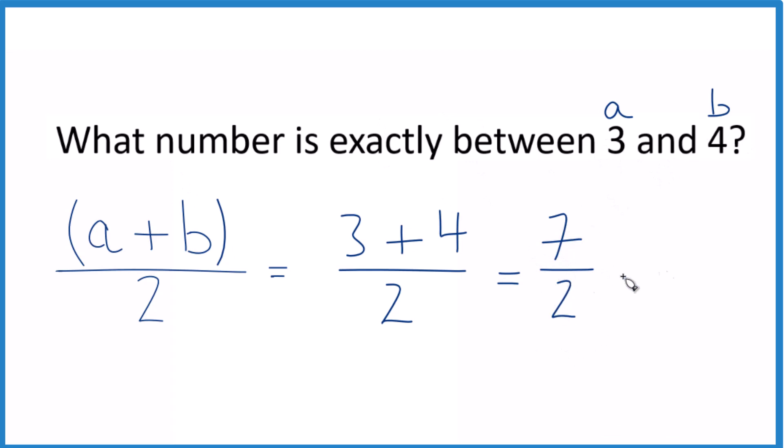This is an improper fraction. You might want to change it to a mixed number. 2 goes into 7 three times with 1 left over, and then we bring the 2 across. So 7 halves and 3 and 1 half, they are the same thing. They have the same value.